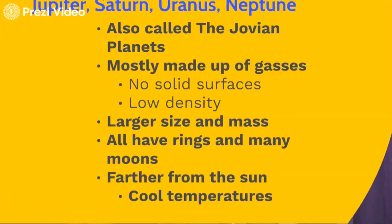Some of them have a solid core inside of densely packed rock, but the outer surfaces are very thick, soupy, gaseous surfaces that make up most of these planets. They're larger in size — a lot bigger than the first four planets. Our inner or terrestrial planets are much smaller. They all have rings and many, many moons. Our first four planets don't have any rings and very few moons, but the outer planets all have rings and moons. Sometimes you can't see the rings, but they're there.